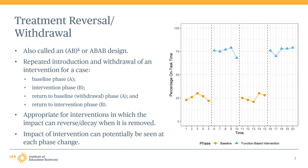The first intervention phase is followed by a phase where the intervention is withdrawn — another baseline condition, sometimes called the return to baseline phase, or the second A phase. The transition between the first treatment phase and the return to baseline phase represents the second opportunity to demonstrate an intervention effect. Finally, there is another treatment phase (the second B phase), and the transition between the return to baseline phase and the second intervention phase is the third and final opportunity to demonstrate an intervention effect. By observing three similar changes as a consequence of the presence or absence of treatment, researchers can have greater certainty that the change is in response to treatment, as opposed to a consequence of history or maturation.